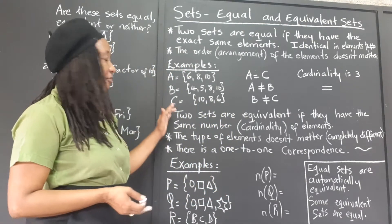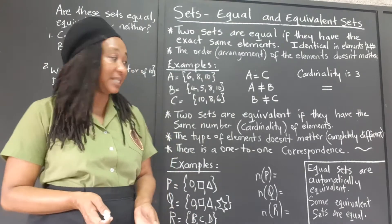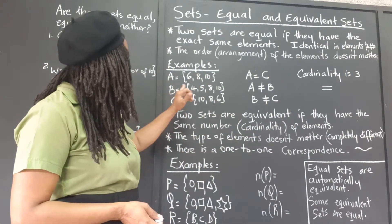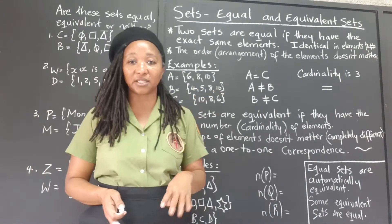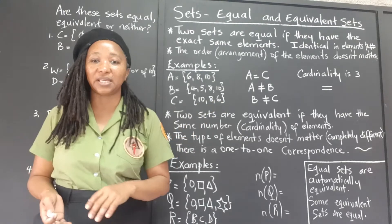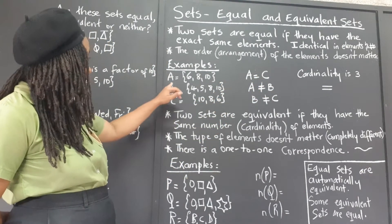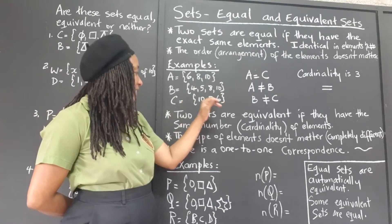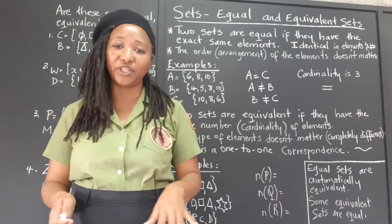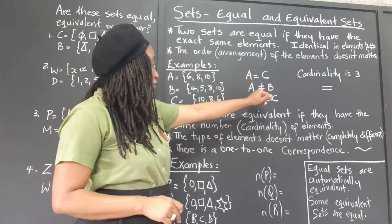For example, here we have three sets and we're going to compare them. Set A has 6, 8, and 10 — the cardinality is 3 because there are 3 elements. Set B has 4, 5, 8, 10 — the cardinality is 4, there are 4 elements. And set C has 10, 8, and 6 — the cardinality is 3, there are 3 elements. Set A is equal to set C because set A has 6, 8, and 10, and set C also has 6, 8, and 10. They are not in the same order, but for sets to be equal it doesn't matter how we arrange the elements as long as they are exactly the same identical elements. Set A is not equal to set B.